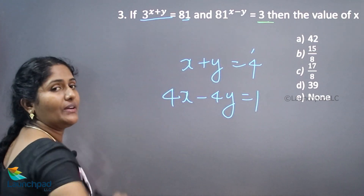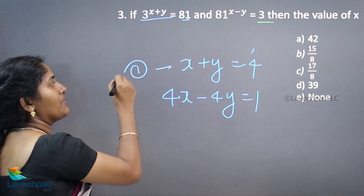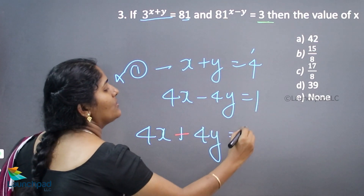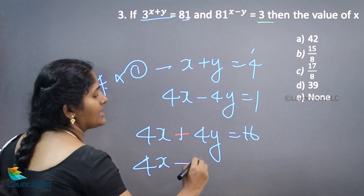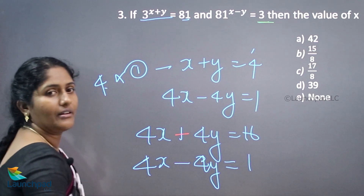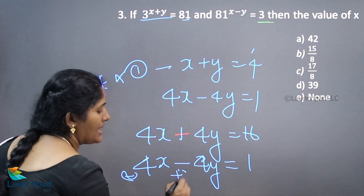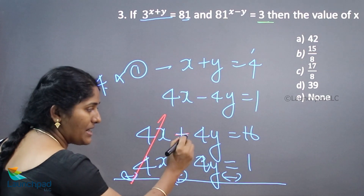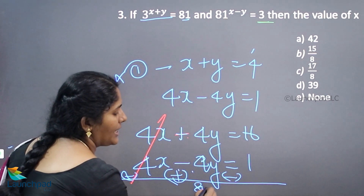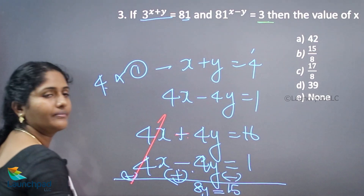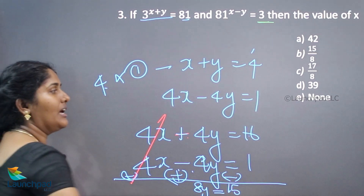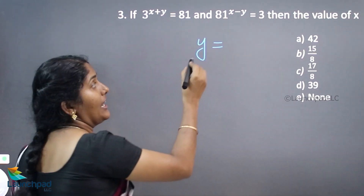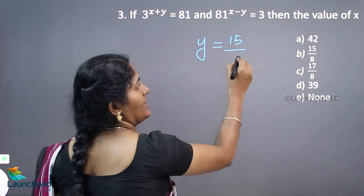By solving both equations we get the x value. Multiply the first equation by 4: 4x plus 4y equals 16. Adding this to the second equation 4x minus 4y equals 1, the 4y terms cancel and 4y plus 4y gives 8y equals 16 minus 1, which is 15. Hence y equals 15 by 8.